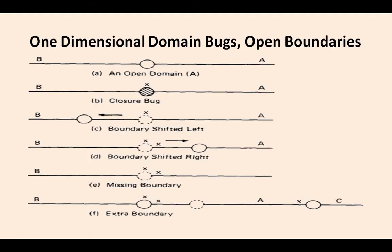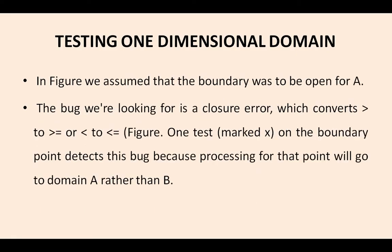This is one-dimensional domain bugs and open boundaries. In this figure, we have assumed that the boundary was open for A. The bug we are looking for is a closure error, which converts greater-than-or-equal-to or less-than to less-than-or-equal-to on the boundary point. This detects the bug because the processing for that point will go to domain A rather than B. We have to observe keenly whether it is greater-than-or-equal-to shifted to less-than or less-than-or-equal-to.